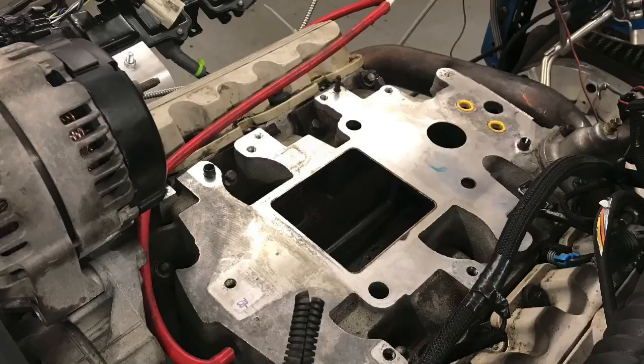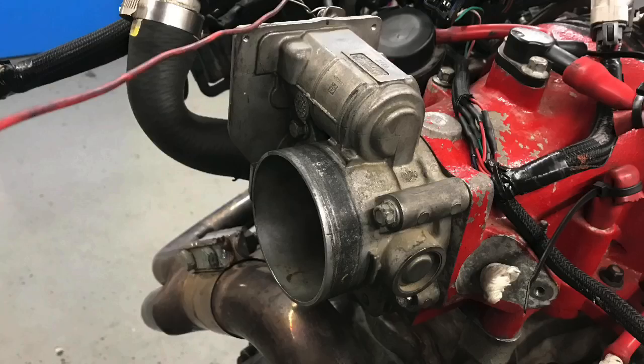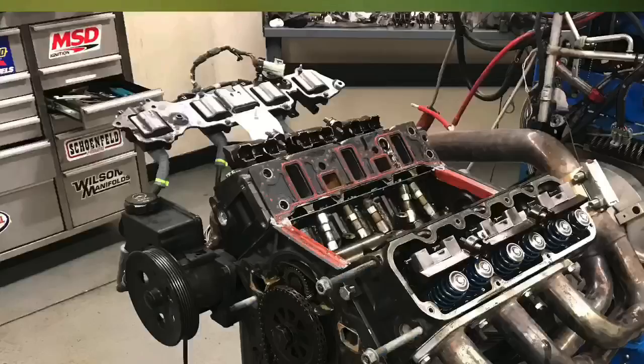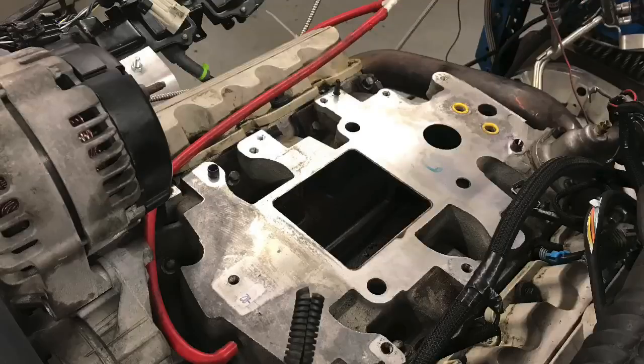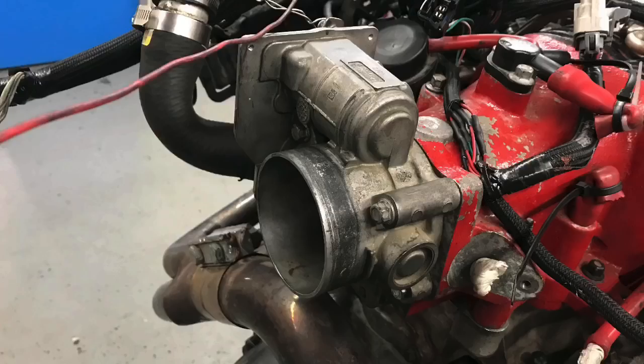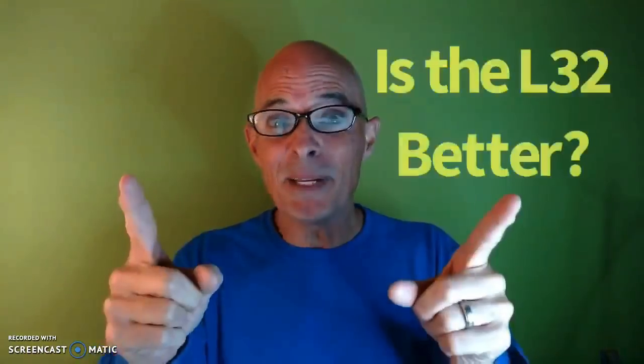But when we eventually ran the L67 bottom end with the L32 heads, intake, blower, a 3.2 inch blower pulley and the mass air throttle body assembly, isn't it essentially an L32 already? Or do you think a really good running L32 would make even more power with that same stuff? Let me know in the comments.